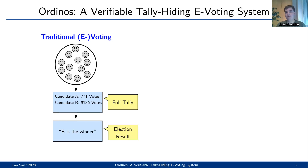Often, the voting result consists of a single winner or a ranking of candidates. So, revealing only this information, but not the full tally, is sufficient. Thus, this voting flow reveals more information than necessary.